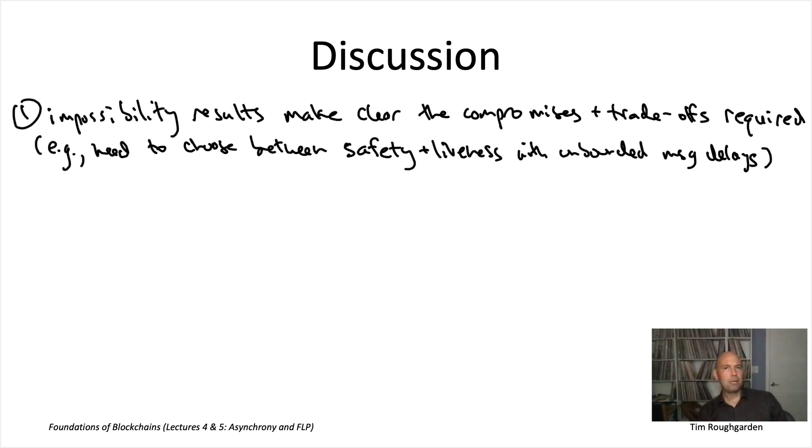This FLP impossibility result tells us something extremely fundamental, a super important trade-off that you must make if you're going to design a blockchain or other type of consensus protocol. Specifically, while the FLP result is stated for Byzantine agreement, the single-shot consensus problem, it also implies impossibility of multi-shot consensus.